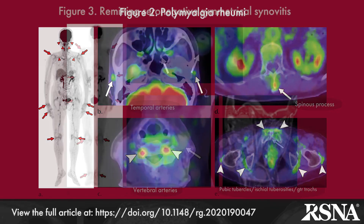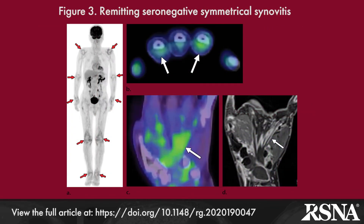Remitting seronegative symmetrical synovitis with pitting edema is a disease of elderly males with abrupt onset polyarthritis and subcutaneous pitting edema of the extremities. Marked tenosynovitis in the hand causing edema is considered a characteristic finding of this disease and can be demonstrated on PET-CT.